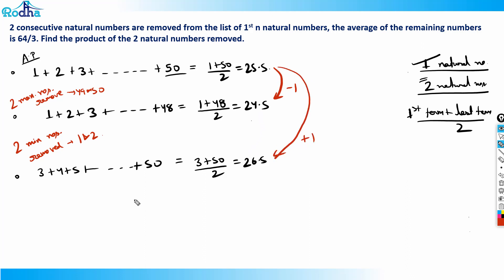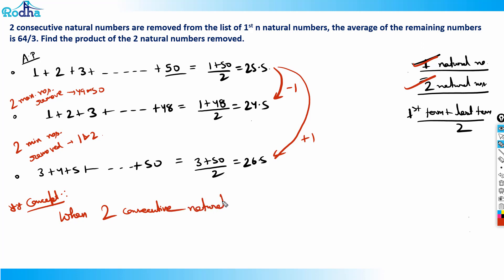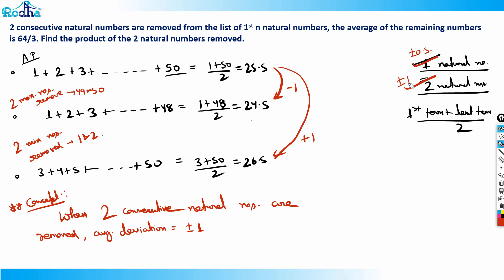From the main average of 25.5, removing the two maximum numbers gives a deviation of minus 1 (24.5), and removing the two minimum numbers gives a deviation of plus 1 (26.5). So the key concept here is: when two consecutive natural numbers are removed, the average deviation is ±1. Compare this to the last video where removing one natural number gave ±0.5.